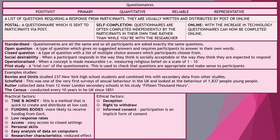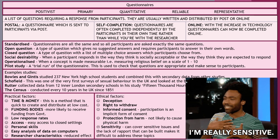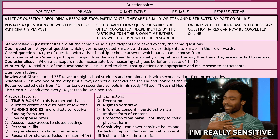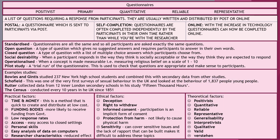Ethically, there is little deception involved; you can offer the right to withdraw, and there is a form of implicit informed consent because participants fill in and return the questionnaire. A questionnaire is unlikely to cause physical harm, but in terms of sensitivity, it could cause emotional harm — because you cannot build a rapport, tackling sensitive topics like abuse or mental health can be quite blunt through a questionnaire.